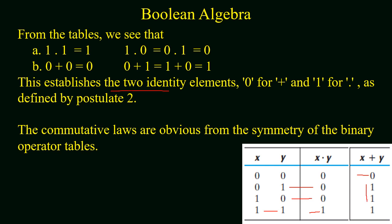This establishes two identity elements, which are 0 for addition and 1 for multiplication, as defined by postulate 2 in the last video. And similarly, the commutative laws are also obvious from the symmetry of the binary operator tables.